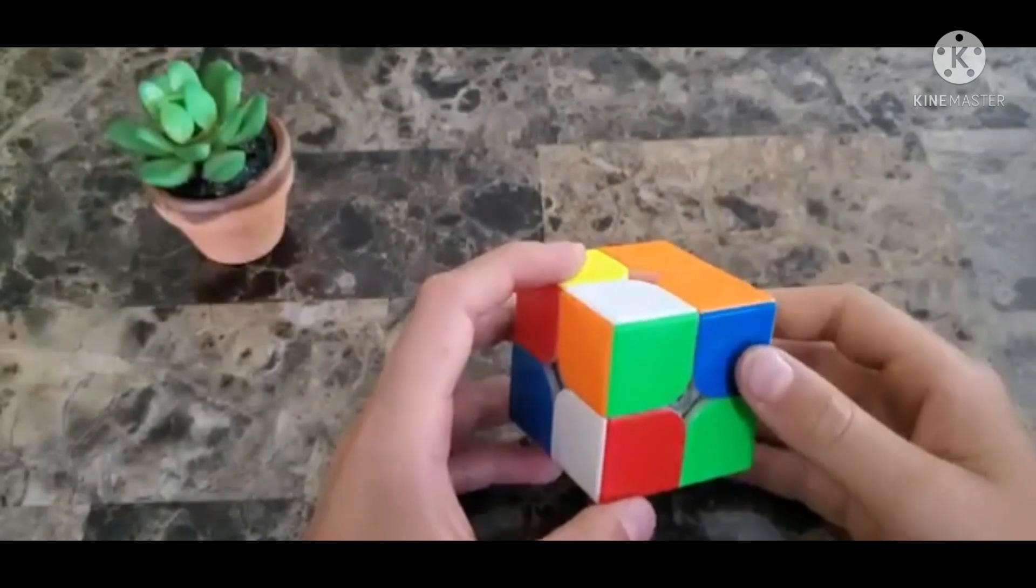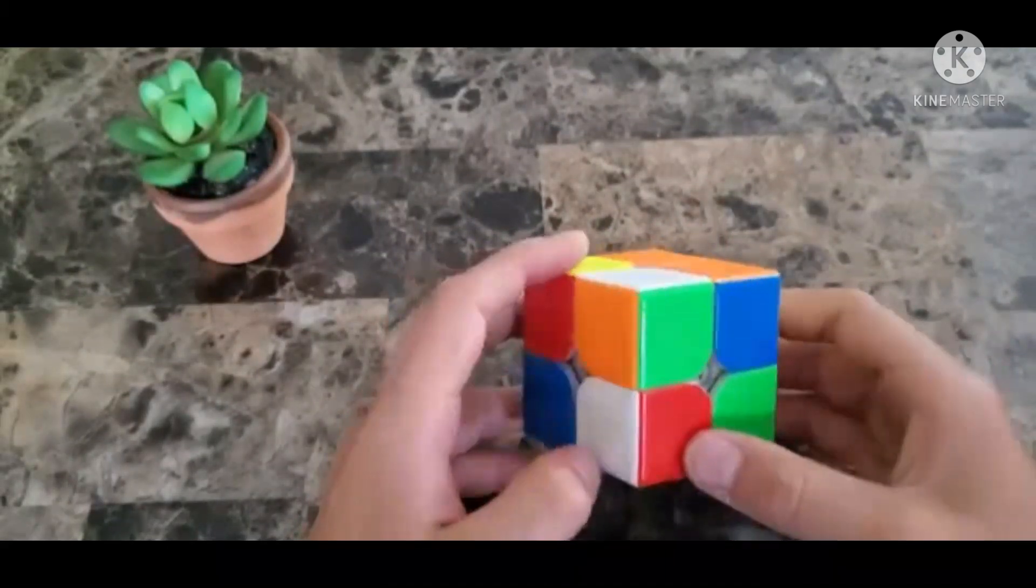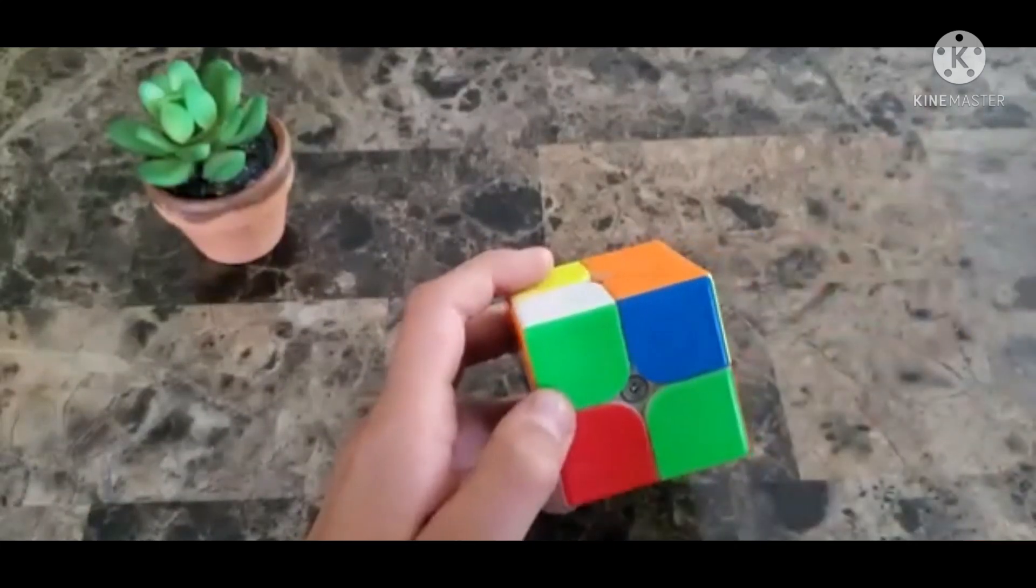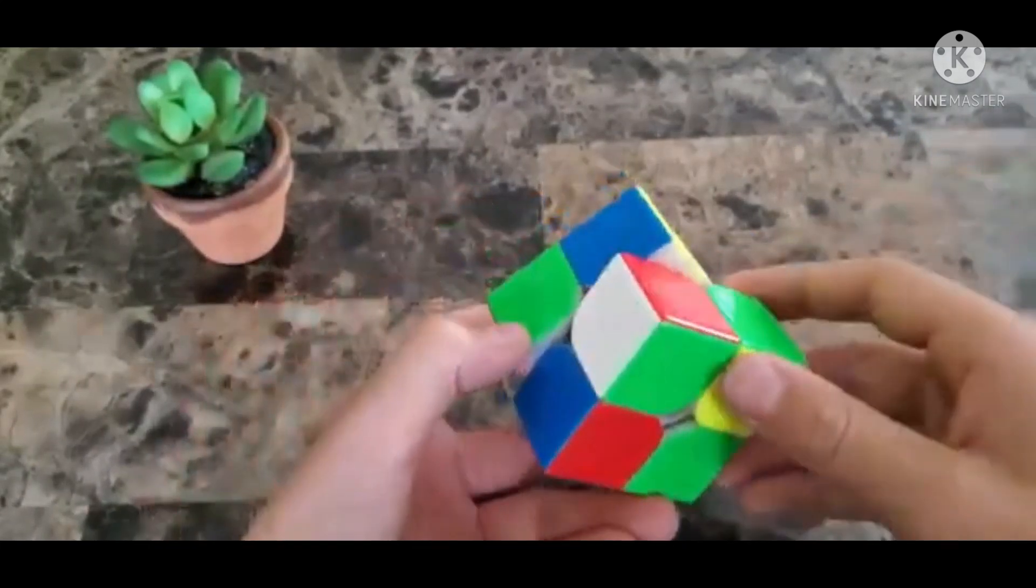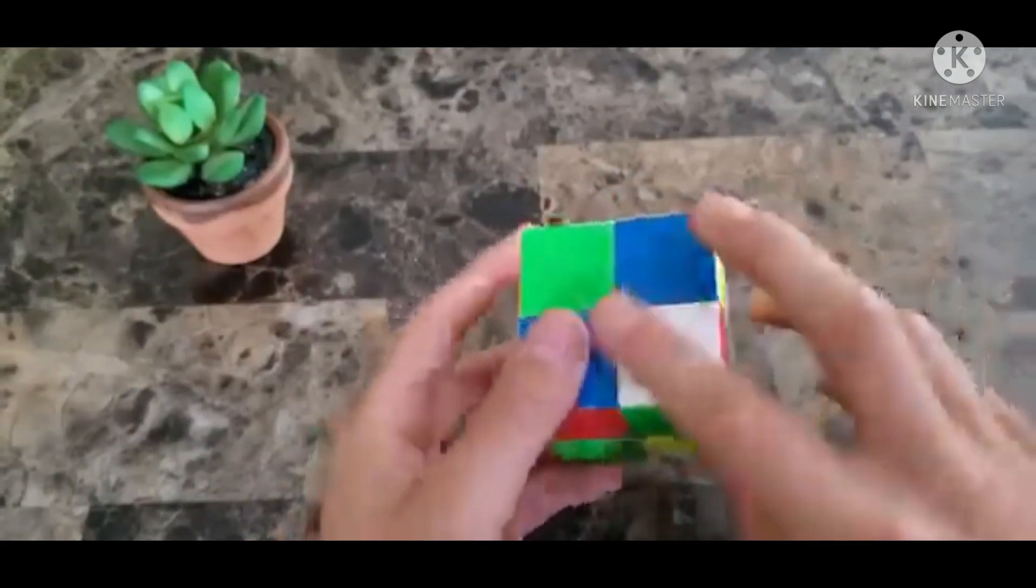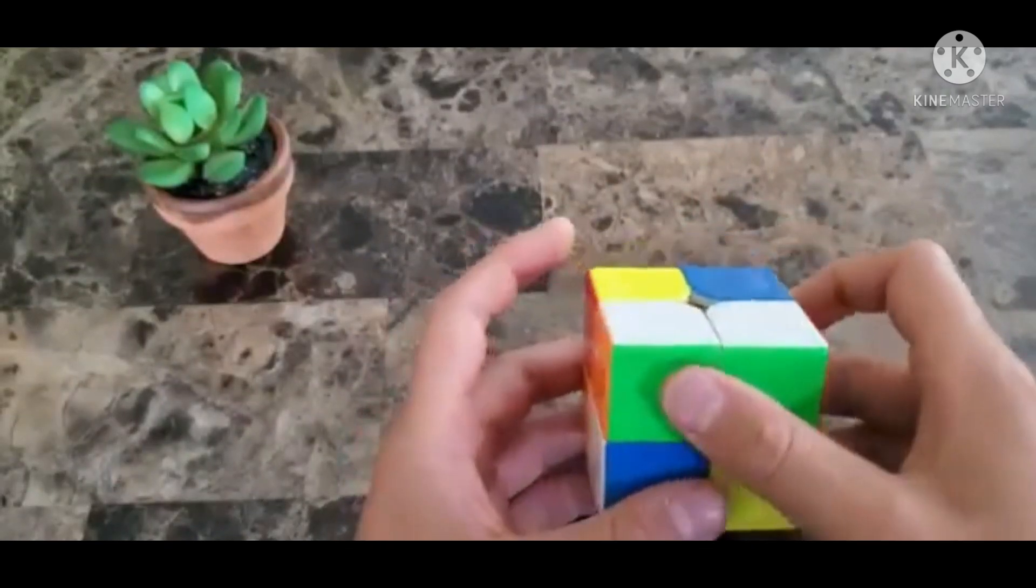Now you see that we have one piece up here and it has orange and green on it so we're going to want to find another white corner that has orange or green. So we see this one right here has green so we moved it right under and you're just gonna move it up like that so it matches.